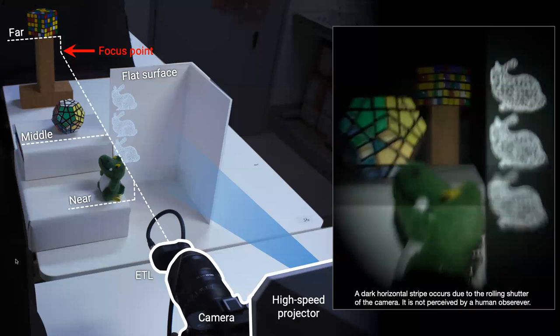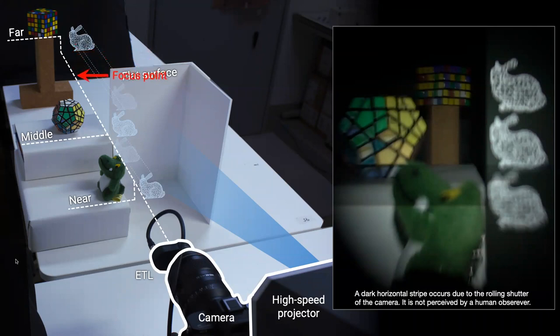And in this experiment, we projected three Stanford bunnies on a flat screen such that the distance of the virtual image of each bunny from the ETL was the same as one of the physical objects. The focus point of the camera was changed from the far to the near of the physical object.